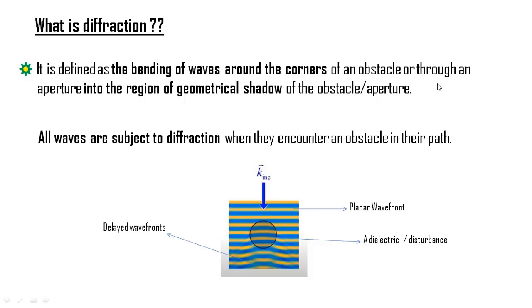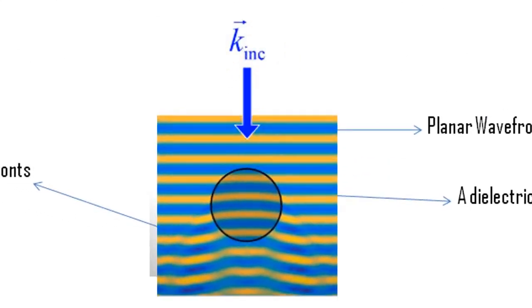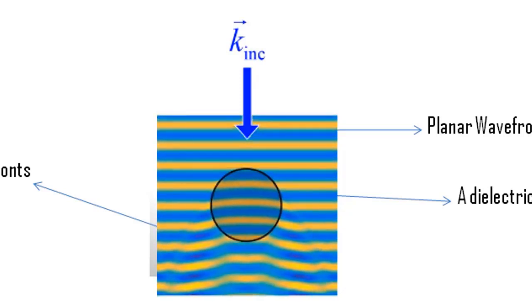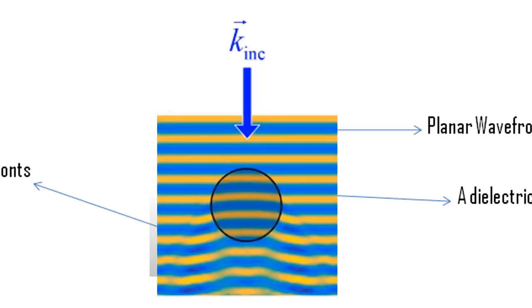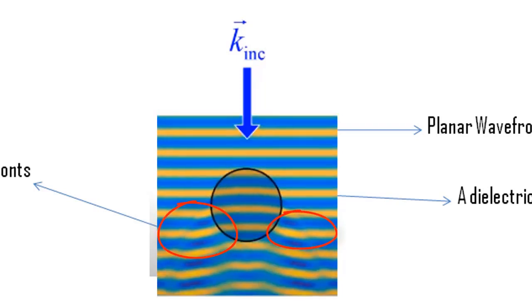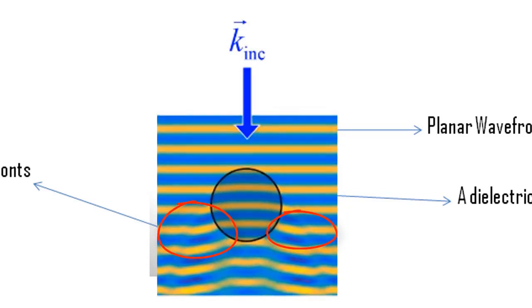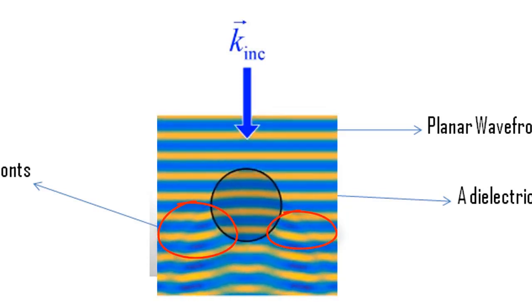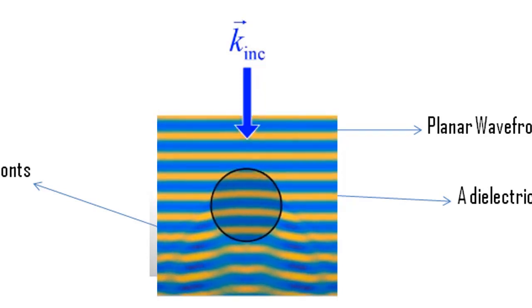The phenomenon of diffraction is native to all waves. This animation is a FDTD, also called the Finite Difference Time Domain simulation of a plane wave incident on a circular dielectric. We can see that the parts of the wavefront are getting delayed after hitting the obstacle. This is because the wave travels slower within the obstacle. The smearing out at the bottom of the line pattern is caused due to diffraction.